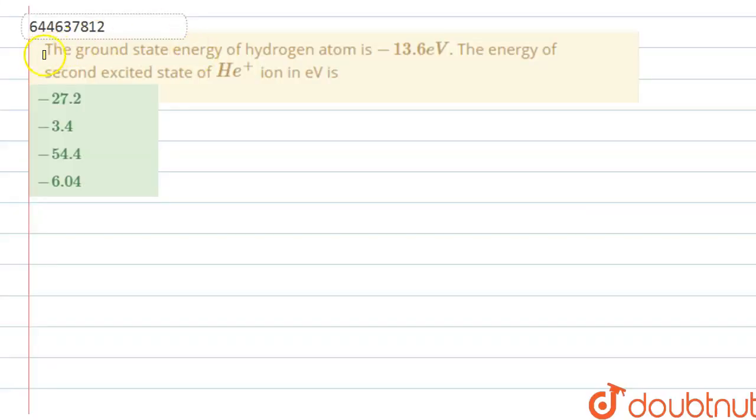Hello guys, in this question it is saying that the ground state energy of hydrogen atom is minus 13.6 electron volt. The energy of the second excited state for helium plus ion in electron volt is. We have four options given. So let's find out its answer.